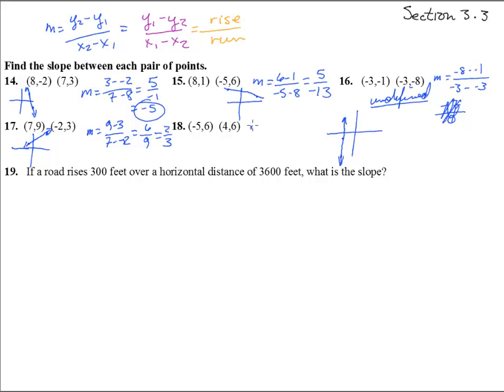Number 18. The slope is, 6 minus 6, over negative 5, minus 4. Which is 0 over negative 9, which is 0.